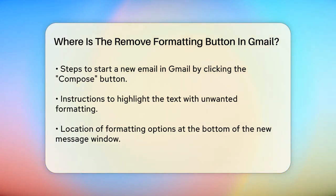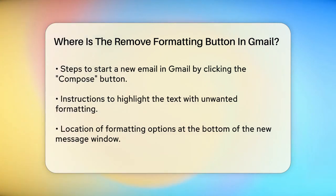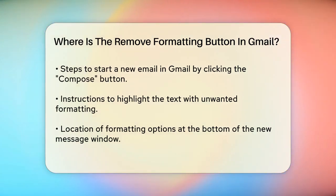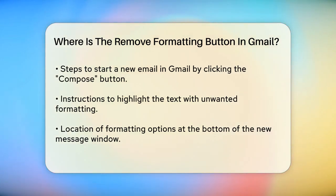First, open your Gmail and start a new email by clicking the Compose button. If you've already pasted some text and it has unwanted formatting, highlight the text you want to change.